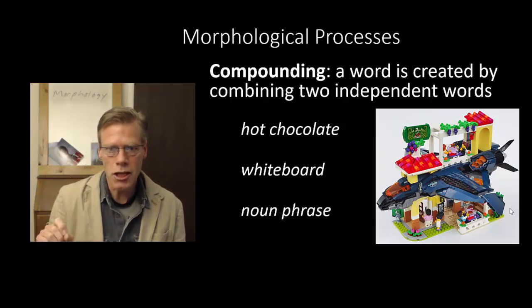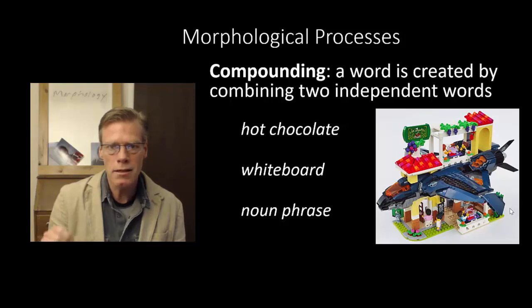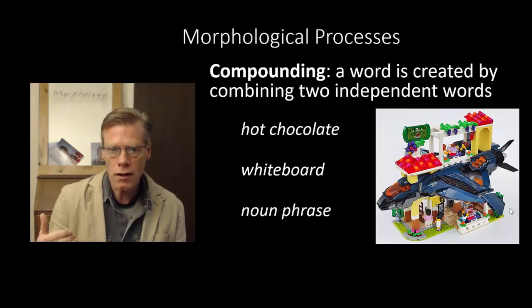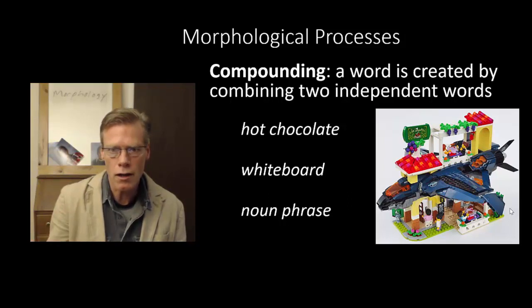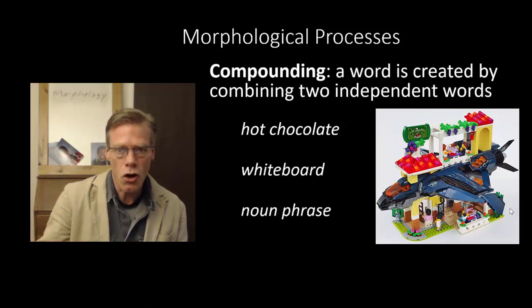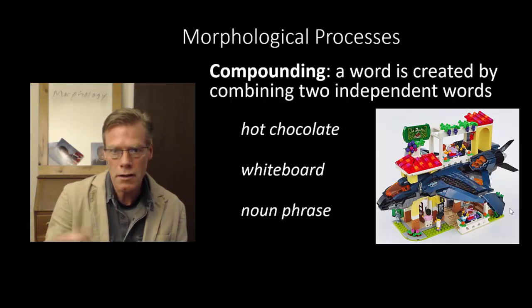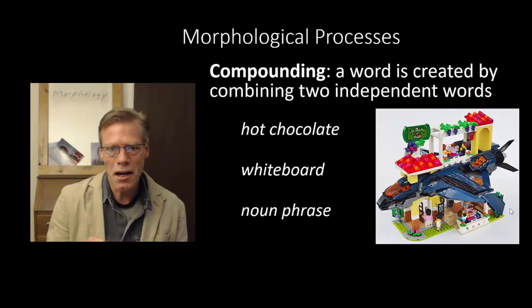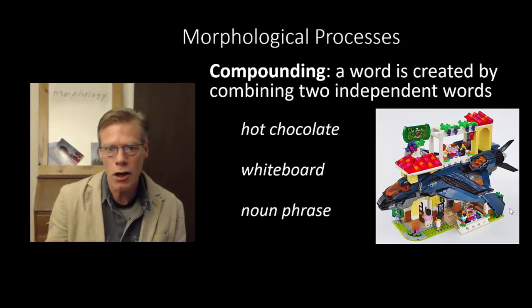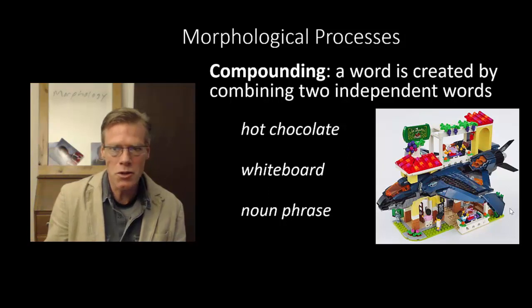Another difference with compound words is that the meaning is somewhat arbitrary — you can't predict it simply by knowing the meaning of the two parts. For example, you cannot guess what 'hot chocolate' the drink would be just by knowing 'hot' and 'chocolate.' A chocolate fondue is hot chocolate, but it's not 'hot chocolate.' Dairy Queen even used to sell frozen hot chocolate, which seems contradictory on the surface, but it's not — you just take the drink hot chocolate and cool it until it becomes frozen.